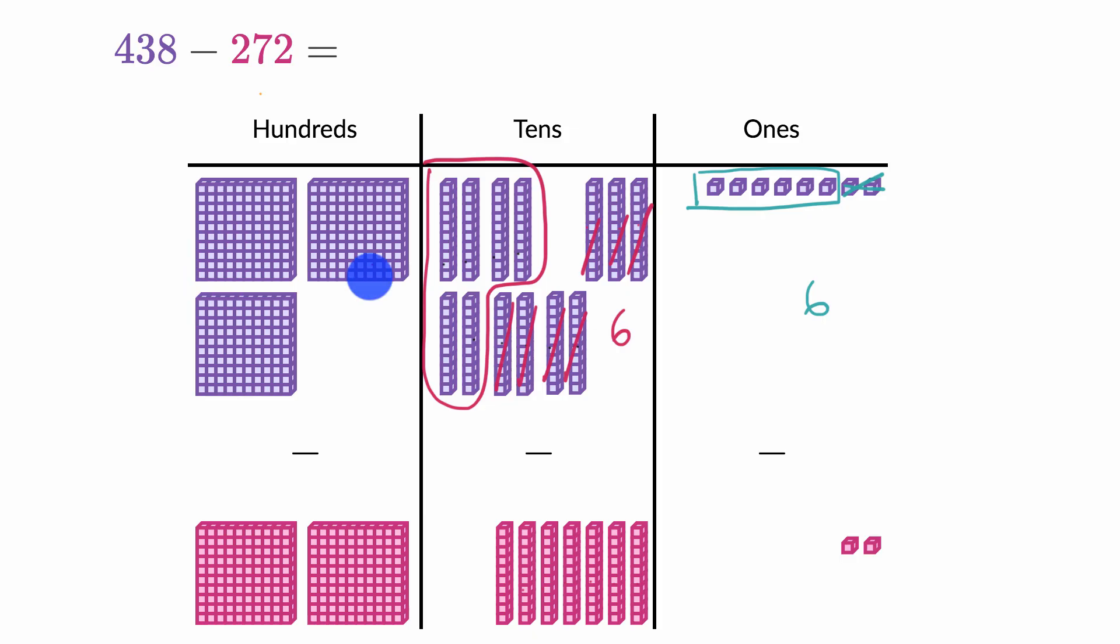And then the hundreds, I have three hundreds. I'm gonna take away two of them. So I'm gonna take away 100 and 200. So I'm left with just 100 there. So I'm left with 100, six 10s and six ones. So this is 100, six 10s and six ones or 166.